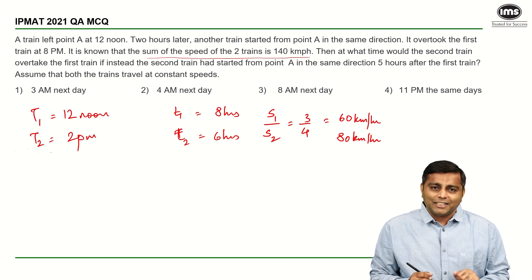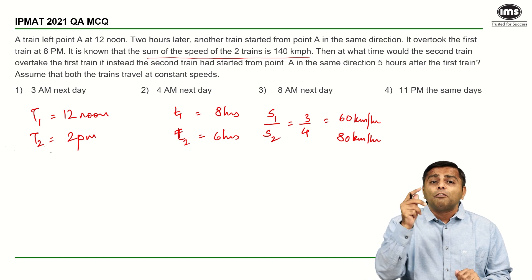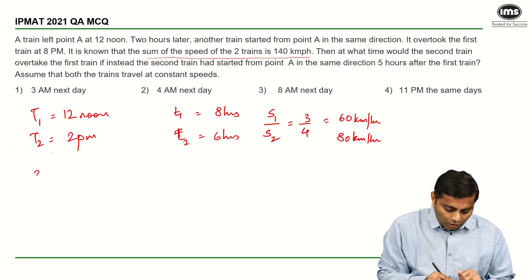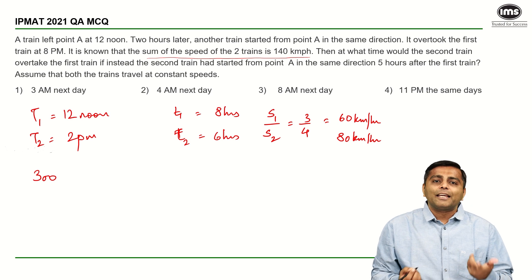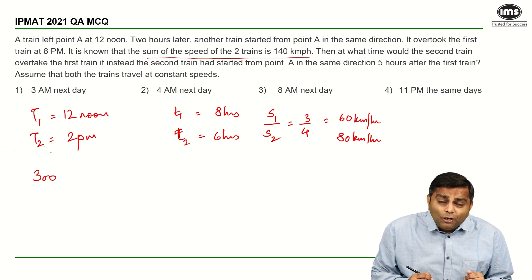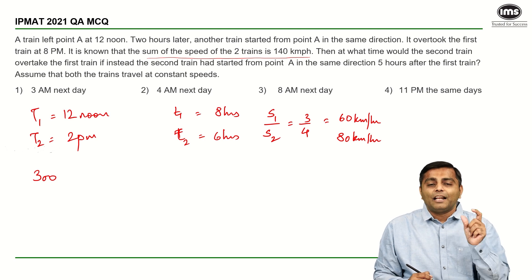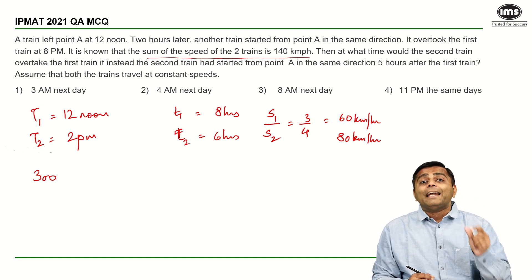When the second train starts at 5, the relative distance between them will be the distance travelled by the first train in those 5 hours. We know the speed of the first train is 60. Therefore, in the 5 hours when T1 is travelling alone, it must have covered 300 kilometers.